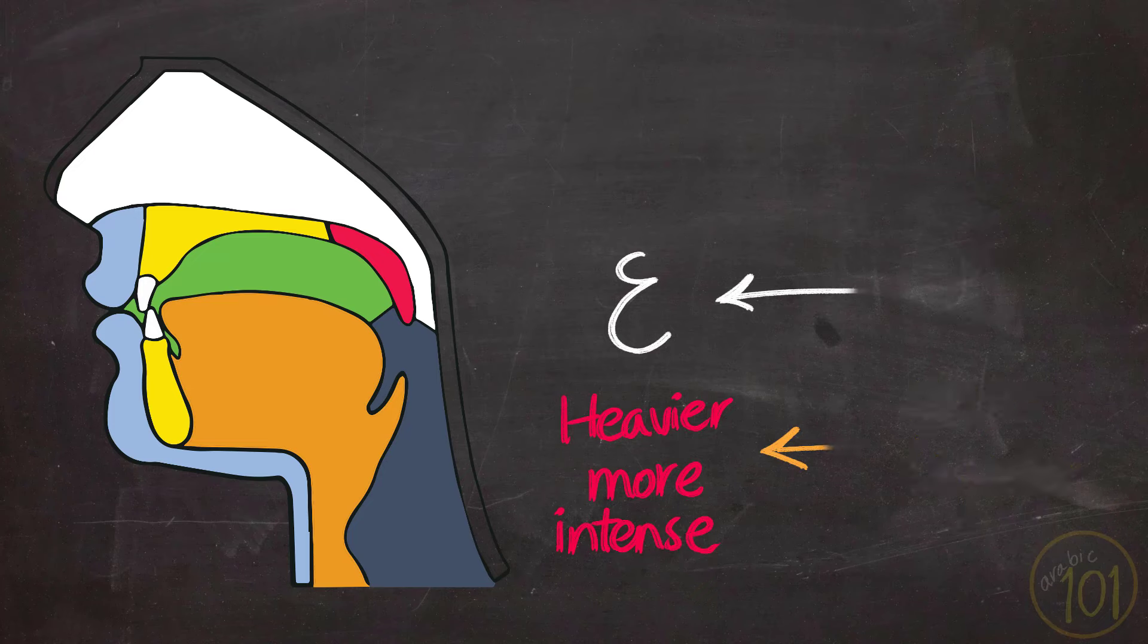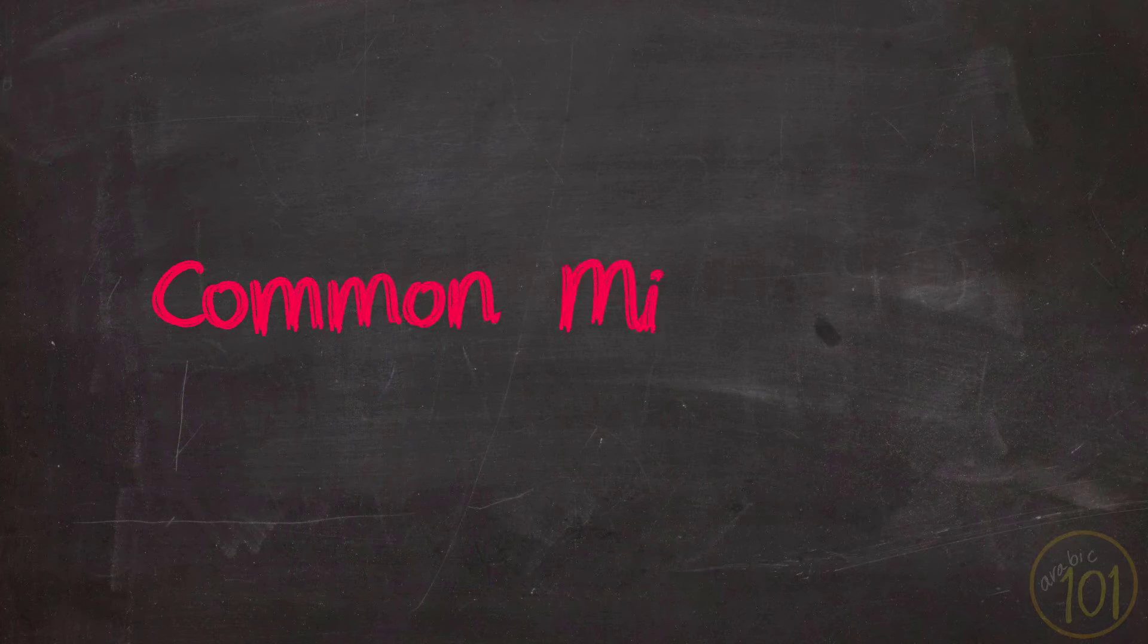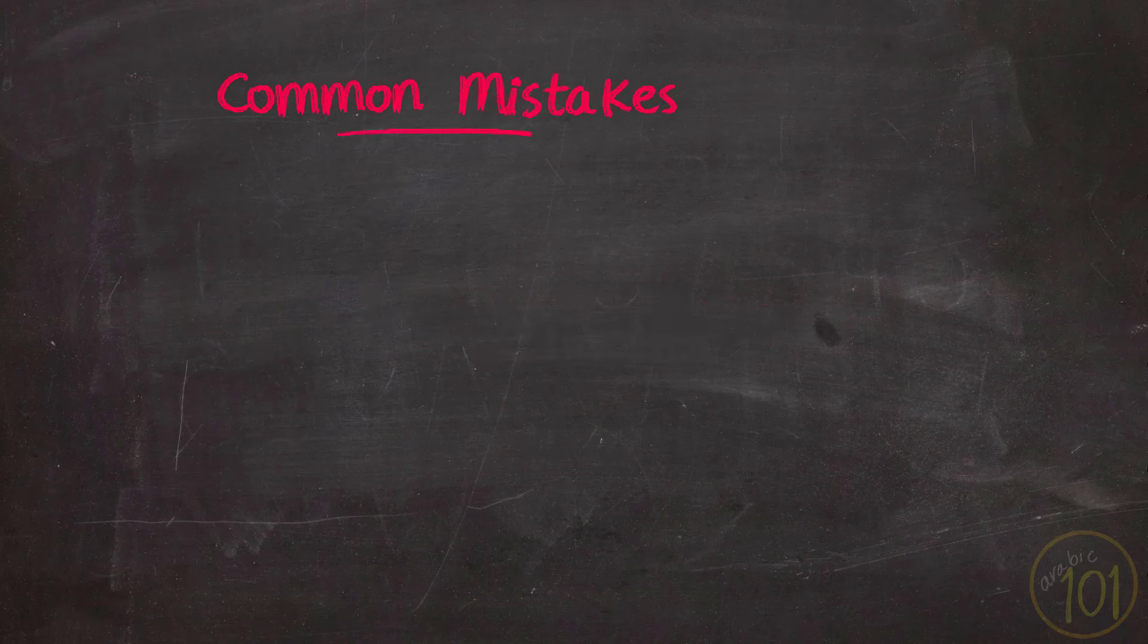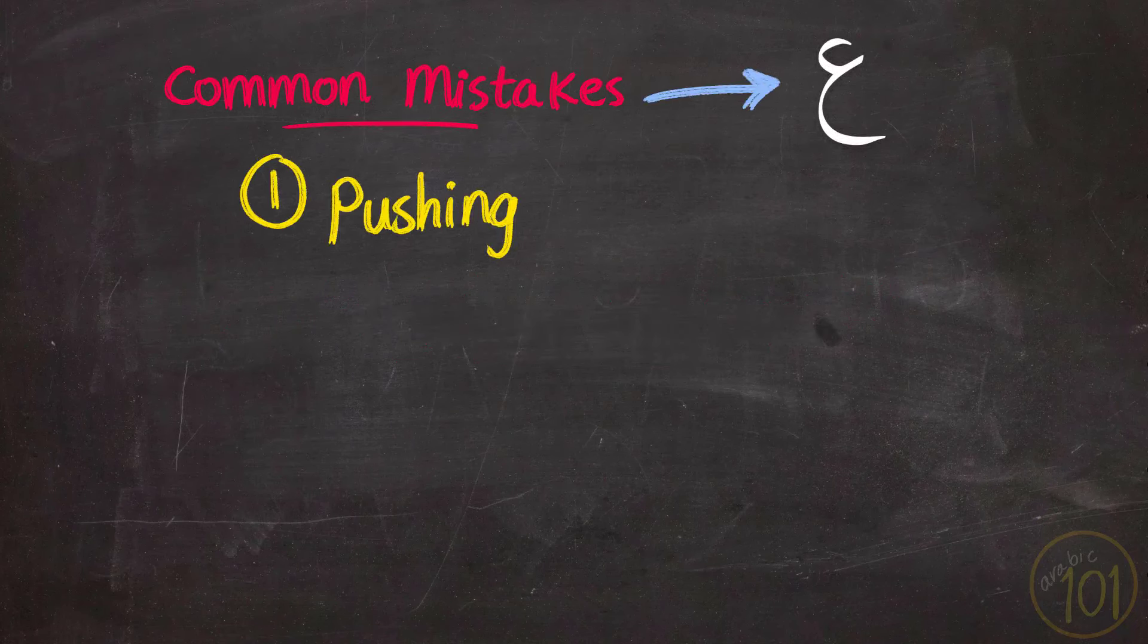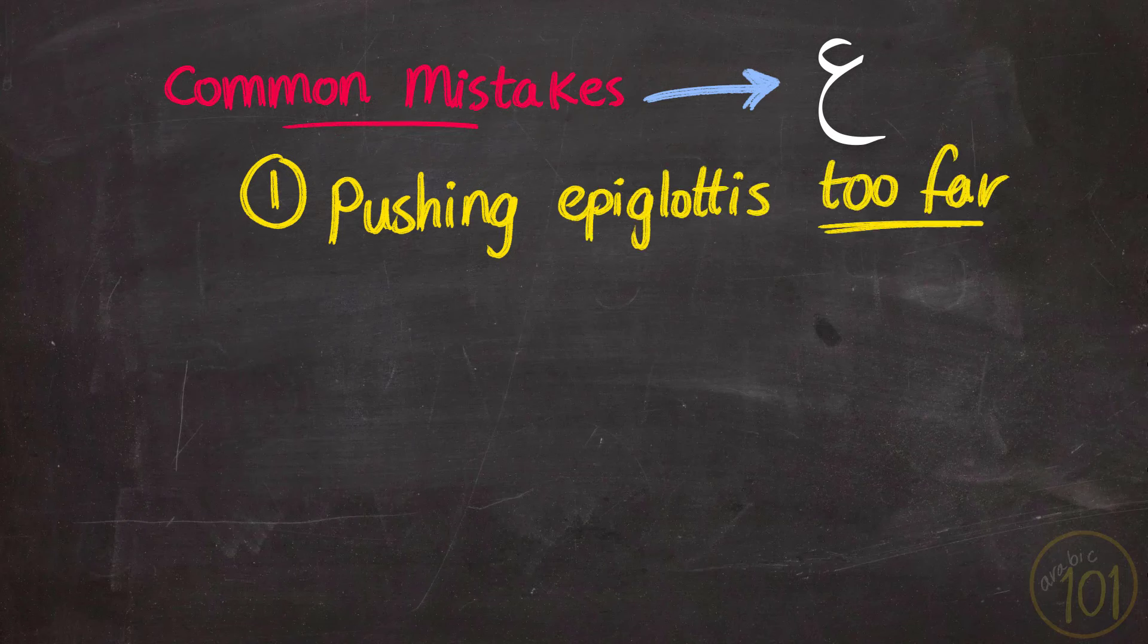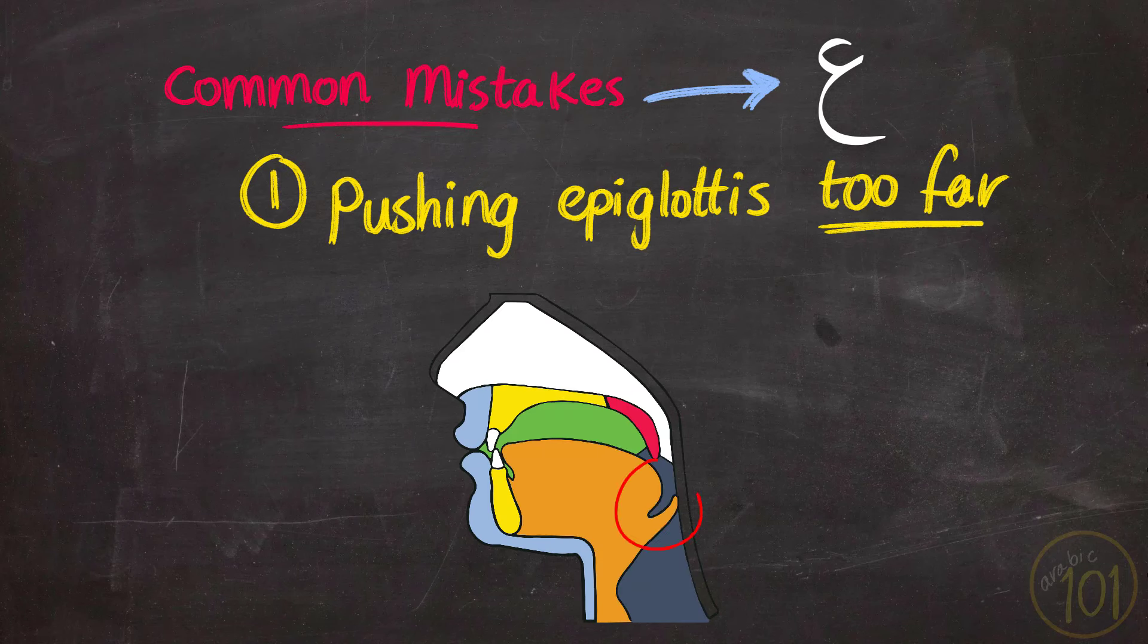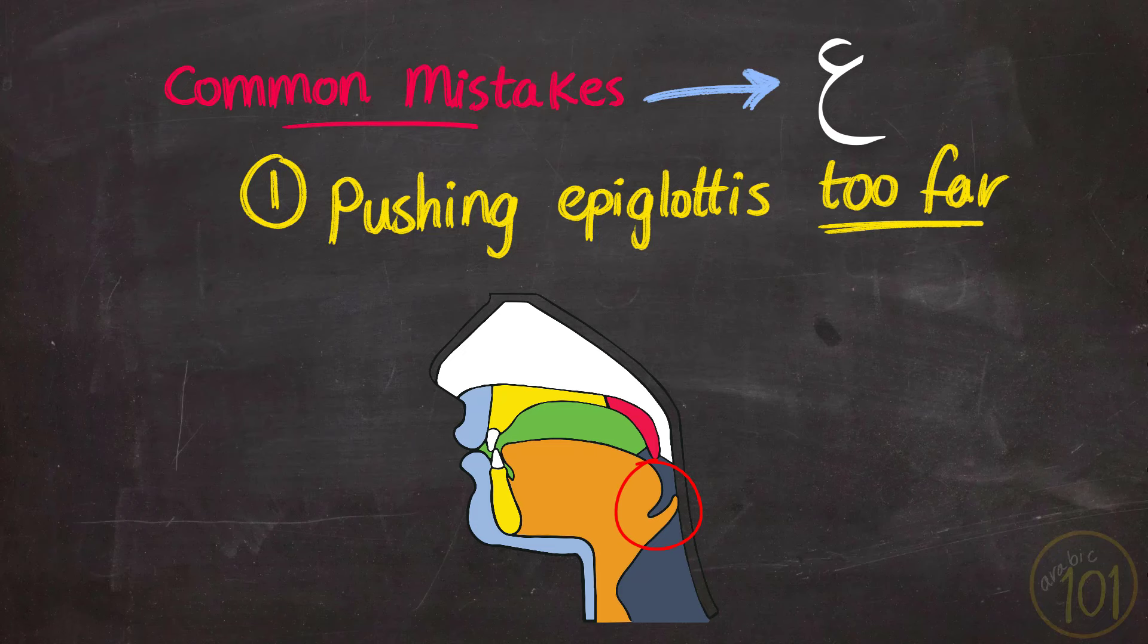Alright, now that we know the basics of how these sounds are performed, let us discuss the most common mistakes related to these two sounds. As for the Ayn, the first mistake is pushing your epiglottis too far back, turning the Ayn into a hard-cut letter with no continuation whatsoever.